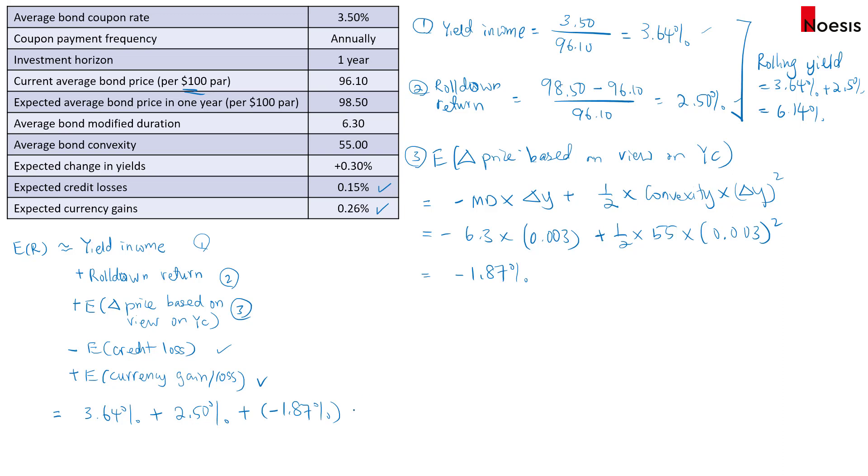Then we minus the expected credit loss 0.15%. Then we add in the expected currency gain of 0.26%. So that should bring us to about 4.38%.